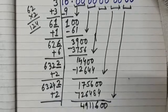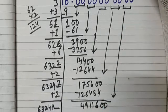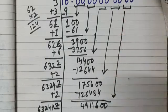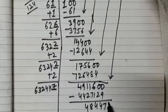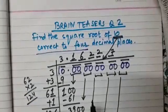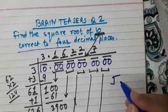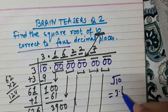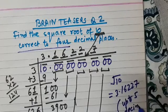Bring down the last pair of zeros. Add 2 to the previous divisor, giving us 63244, and we need to think of a digit here to put in the quotient. It is 7, so we get the product as 442,7129. When we subtract, we get 484471. We have consumed all pairs of zeros after the decimal sign. So the square root of 10 is equal to 3.16227, up to 5 decimal places.